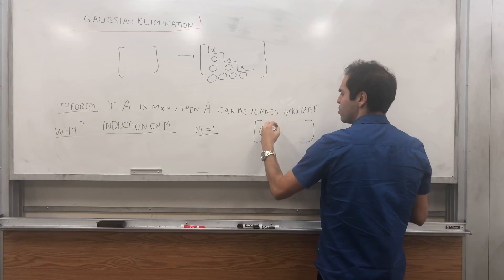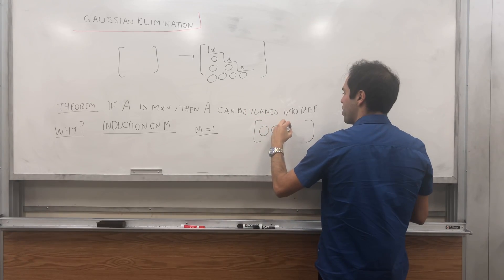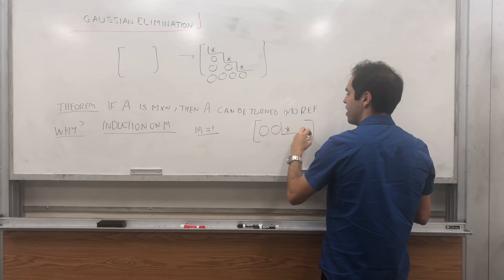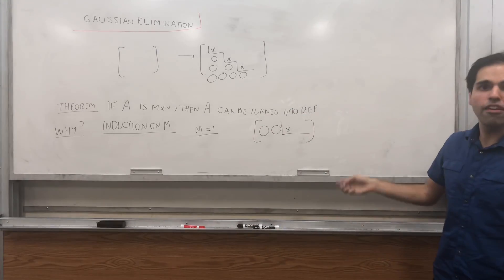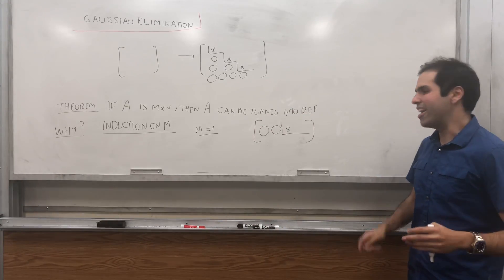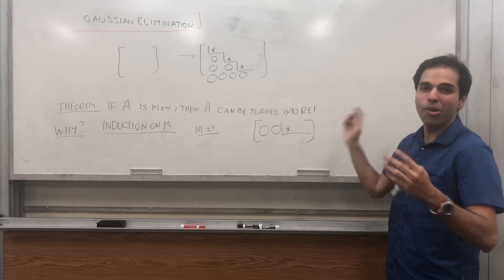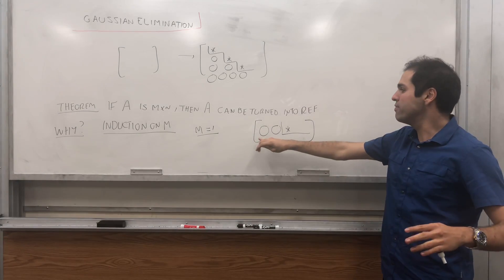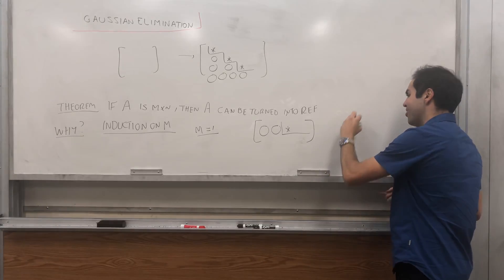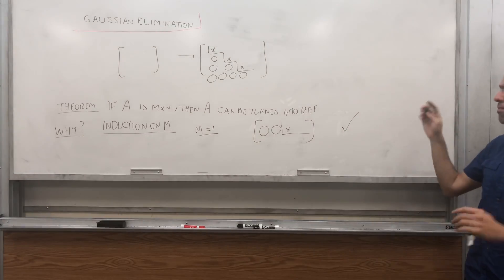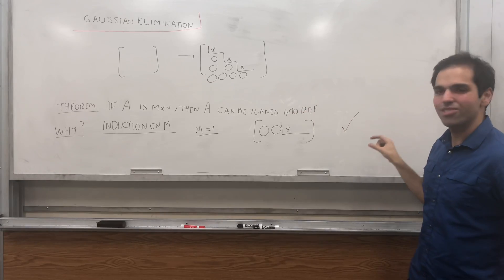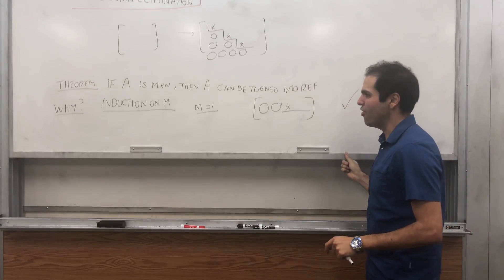or there's a non-zero entry somewhere. So the first non-zero entry and everything to the left of this first non-zero entry is actually zero. And there might be no zeros, which is also okay.